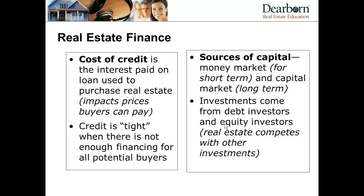Credit is described as tight when there's not enough financing for all potential buyers, or when underwriting requirements are stricter than before. A buyer may have the same income as a few years ago, but other elements of his credit profile might now prevent him from getting financing where he would have qualified before. The chapter also introduces the term money market for short-term loans that a developer might take out for a year or two to build a project.